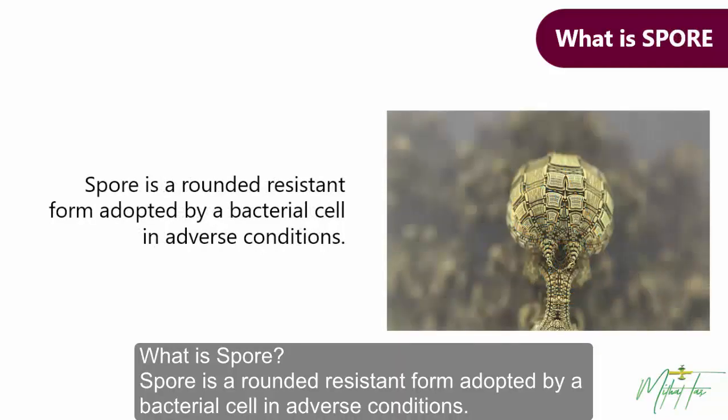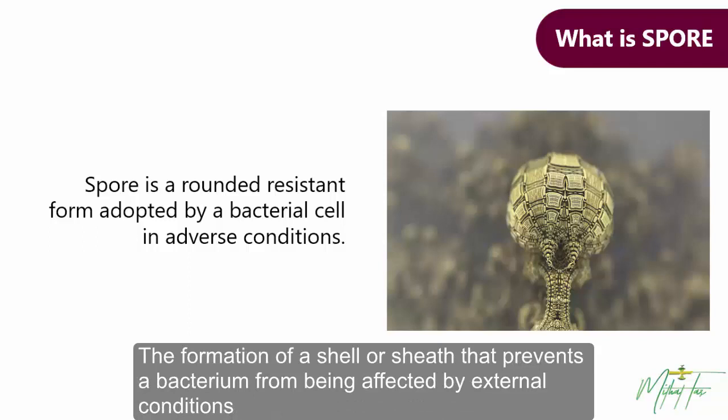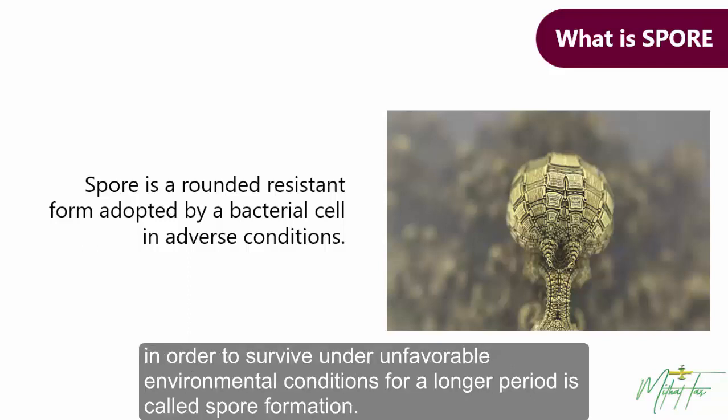What is a Spore? A spore is a rounded, resistant form adopted by a bacterial cell in adverse conditions. The formation of a protective shell that prevents a bacterium from being affected by external conditions in order to survive under unfavorable environmental conditions for a longer period is called Spore Formation.